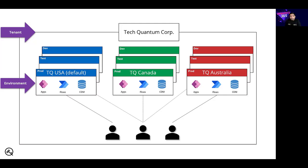You can create more than one environment to manage solution development and data storage by setting up one environment for development, one for testing, and another for production. Many clients also use another environment for testing all the integrations before it goes to production. So development, test, and production are the three common types, but you can create multiple environments. You can also set up an environment based on a geographical location — for example, you might set up an environment for Europe and another for Asia Pacific. Each of these environments will have zero or only one instance of Common Data Service.